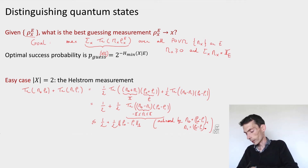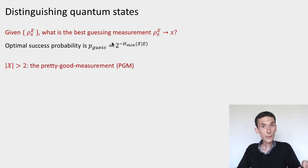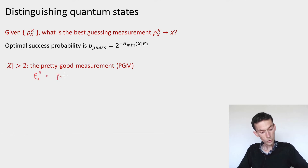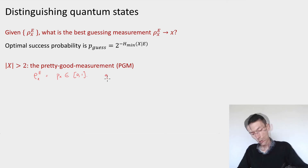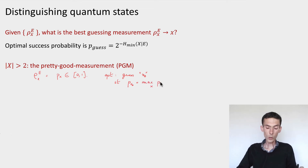The general case is a little more complicated. Let's first consider the classical case, where rho_x is just a number — the probability of x. So I would take rho_{xe} equal to p_x, just a number between 0 and 1. In this case, we know the optimal guessing measurement: we would guess x_0 all the time, such that p_{x_0} is the maximum probability. We just guess the most likely outcome, and this is the best guessing measurement.